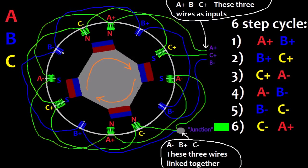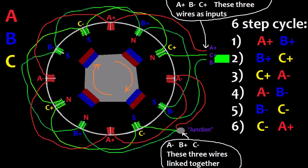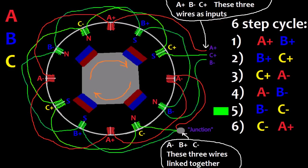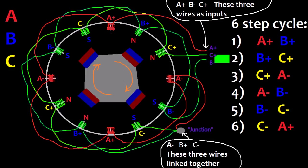C minus A plus is the sixth step. Plus signal flows in the A plus wire in the forward direction through the A coils to the junction, then to the C minus wire in the reverse direction through the C coils. And you can see in this simple animation how these stages cause the magnetic field to rotate around.